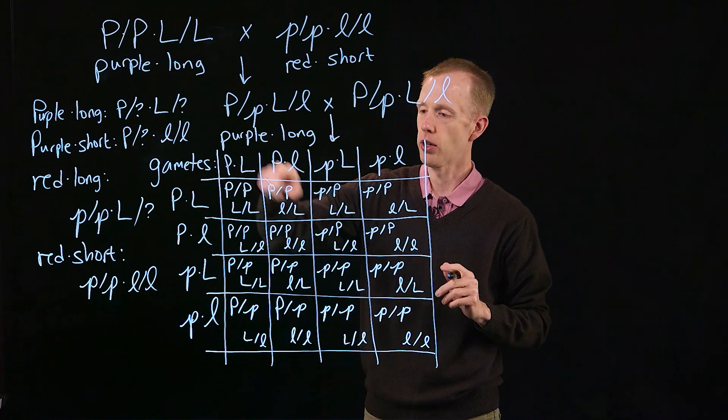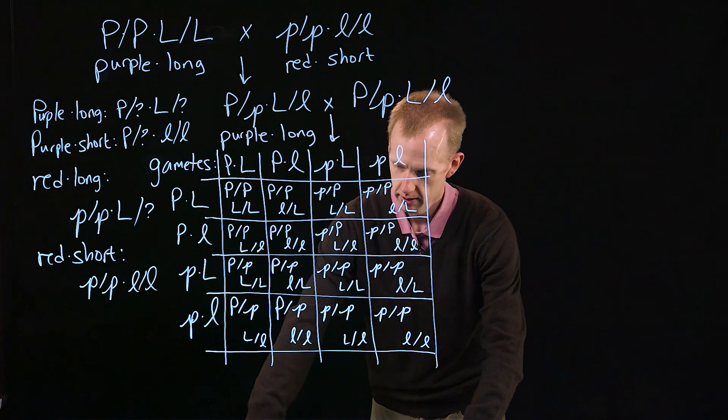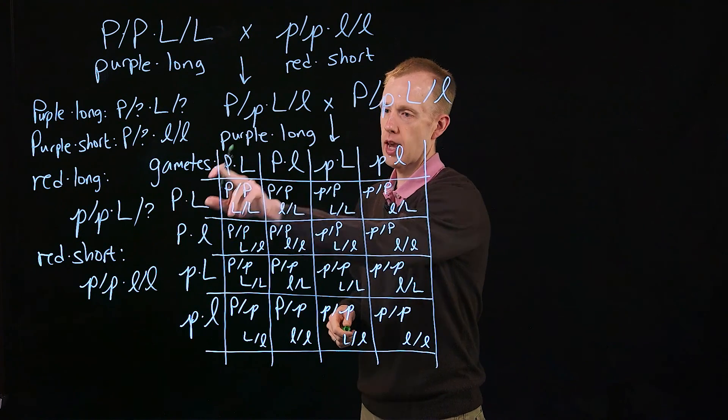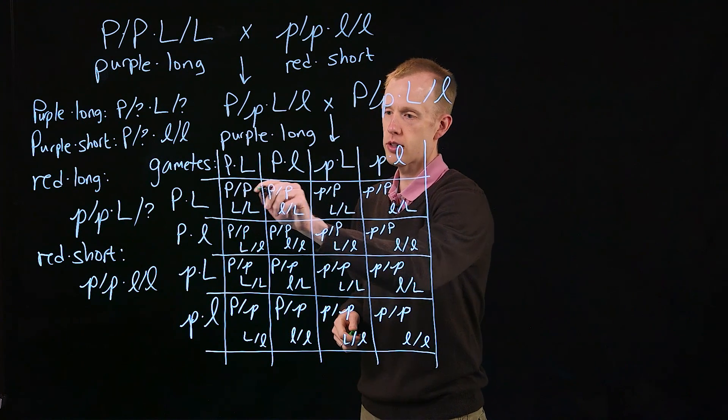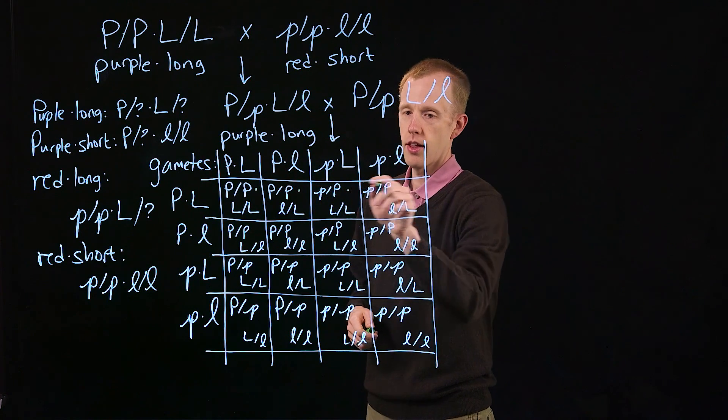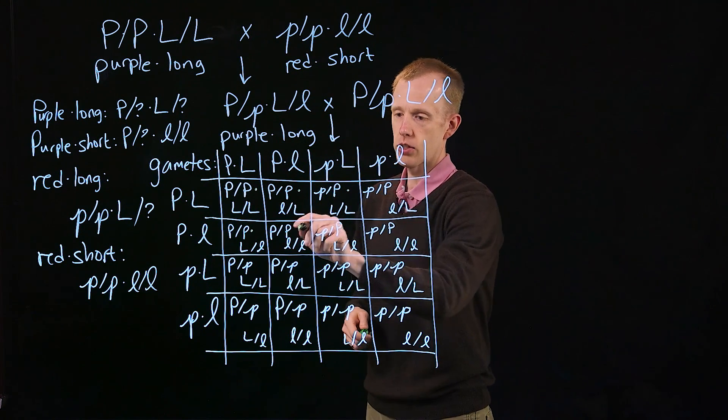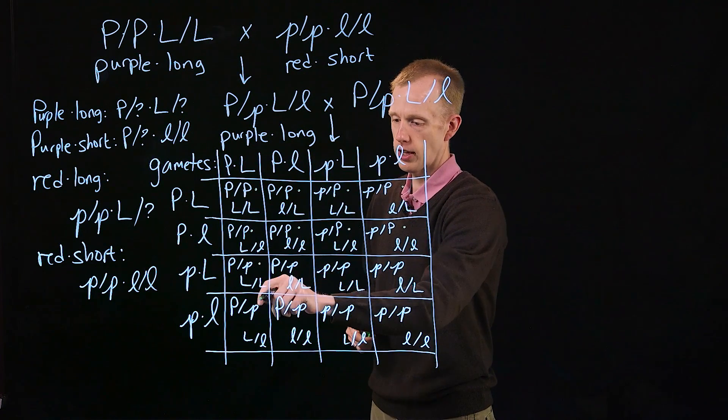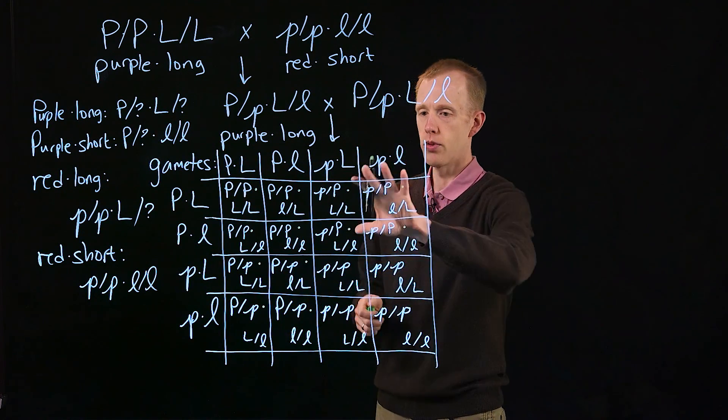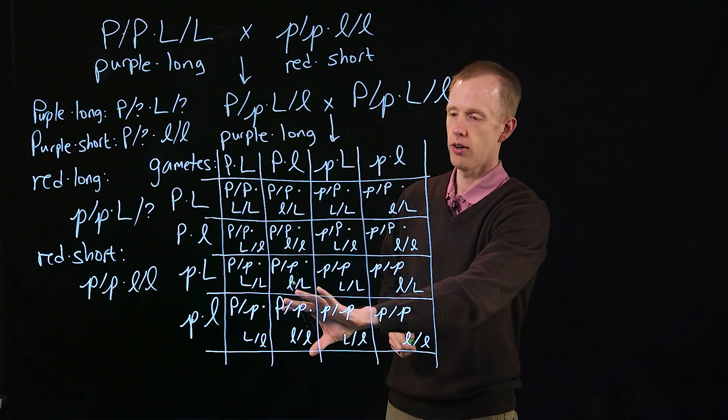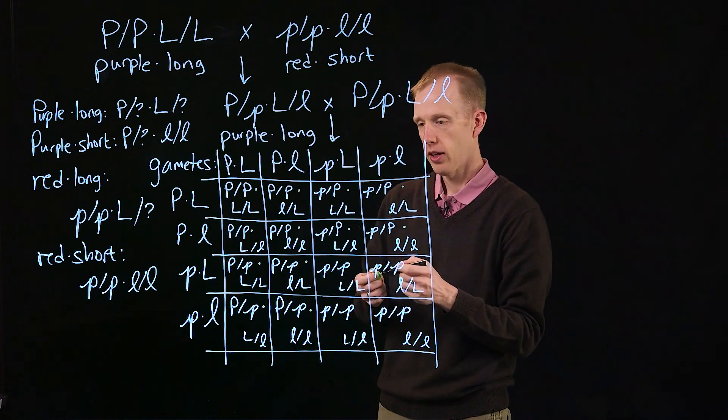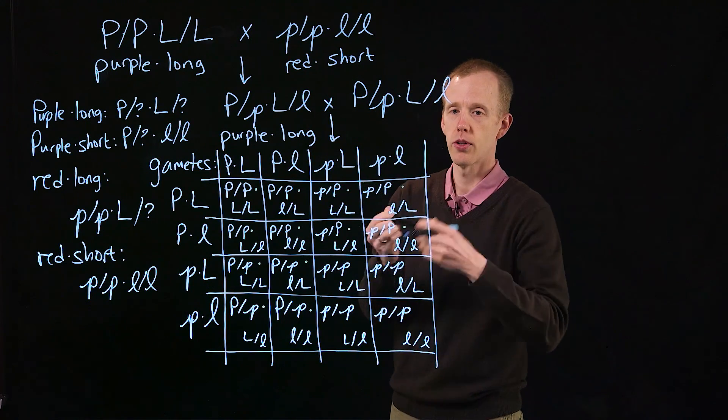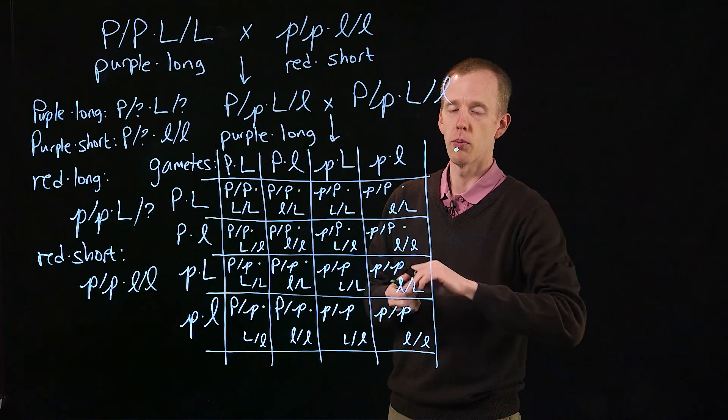How many P over anything, capital L over anything, do we have? Every row that has a capital P in it is going to produce an individual that has at least one capital P, and every column likewise. These three quadrants of this Punnett square have a capital P in them, so those are going to produce purple plants.